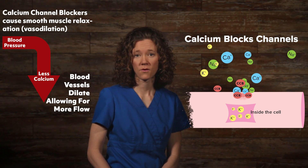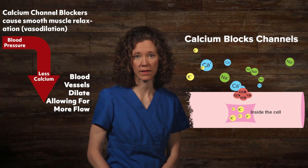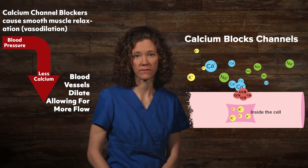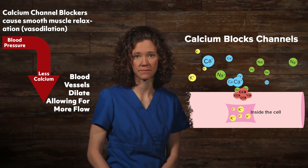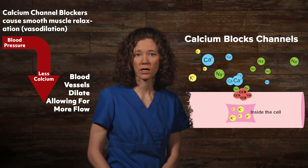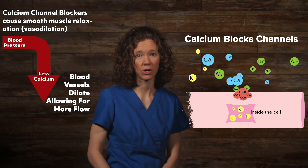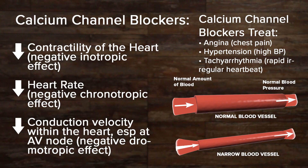Therefore, calcium channel blockers cause smooth muscle relaxation or vasodilation. They dilate coronary arteries and peripheral arterioles, but not veins. They decrease the contractility of the heart, also known as a negative inotropic effect.